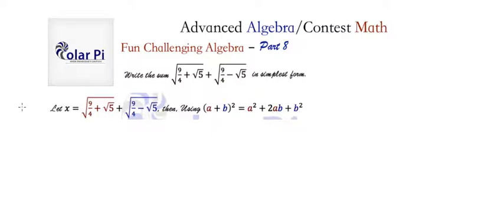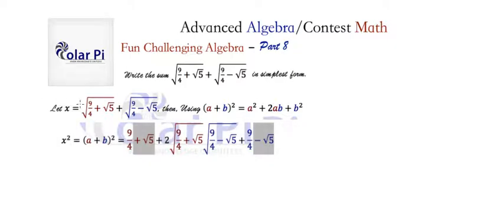Then x squared will be a plus b all squared, which is a squared plus 2ab plus b squared. Note that this is going to allow us to do some nice things. For example, a squared is going to allow us to get rid of the square root here, so we could just write 9 over 4 plus root 5. Then b squared at the end is also going to allow us to get rid of a square root, so we could write 9 over 4 minus root 5 for b squared.